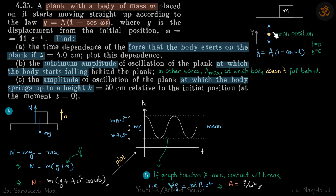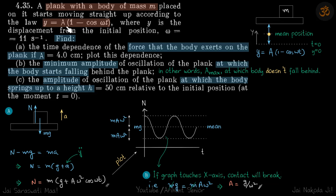Differentiating gives the normal reaction as N = m(g + aω²cos ωt). Initially, when the plank is at the bottom and about to shoot up, N is maximum. When the plank is at the top and wants to come down, N is minimum — this happens when cos ωt = -1, i.e., at y = 2a.